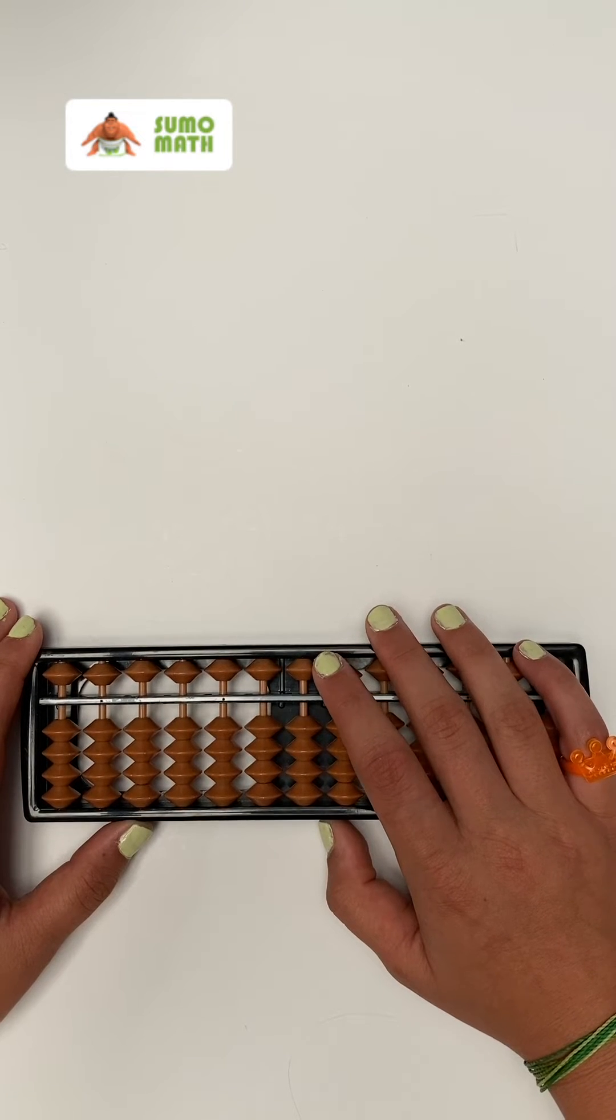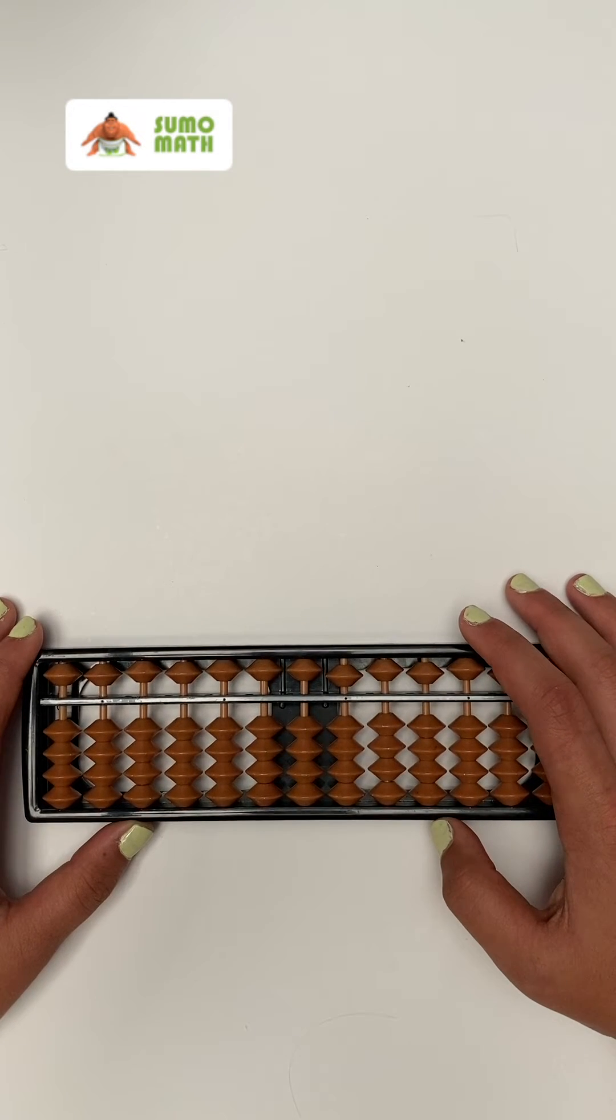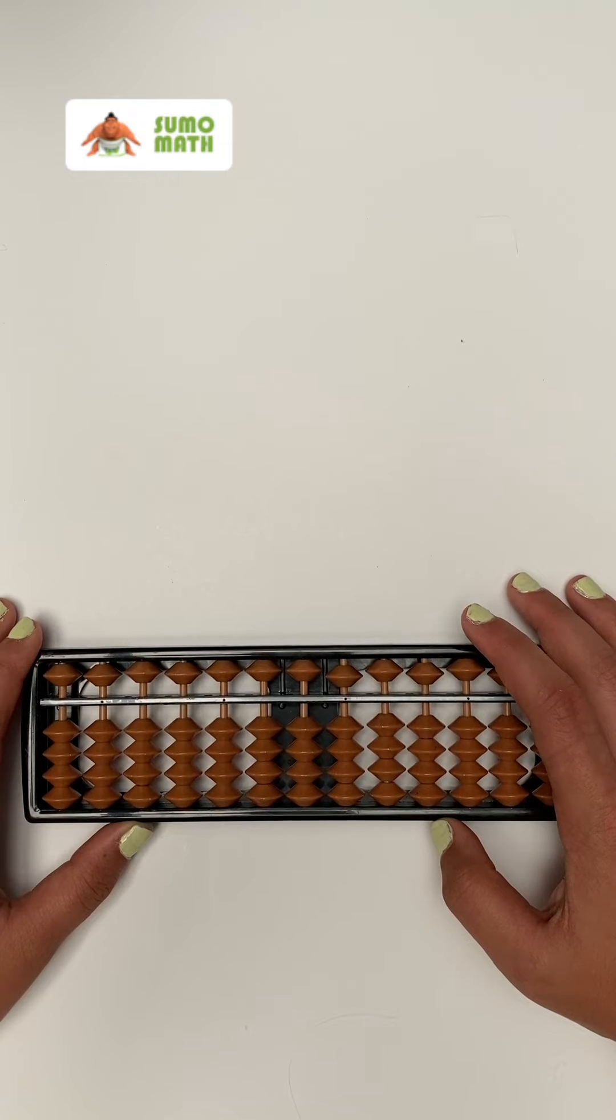Way to go! We only have one more digit left to learn, the number nine. After learning the number nine, you will know how to place all ten numbers including zero on the abacus.